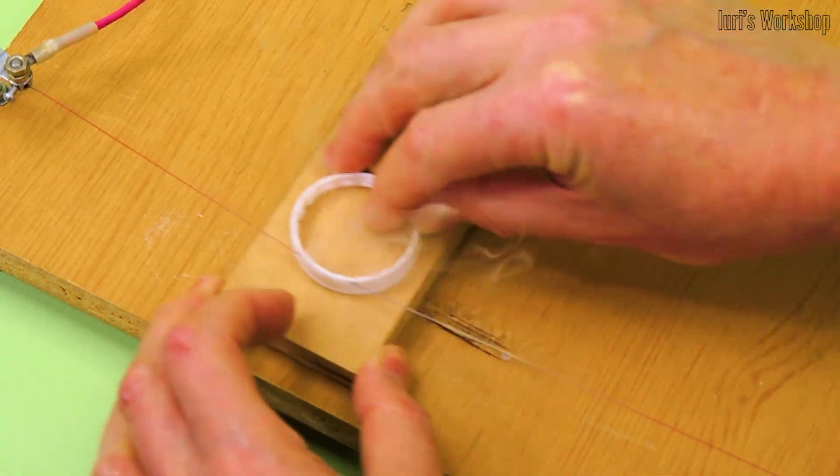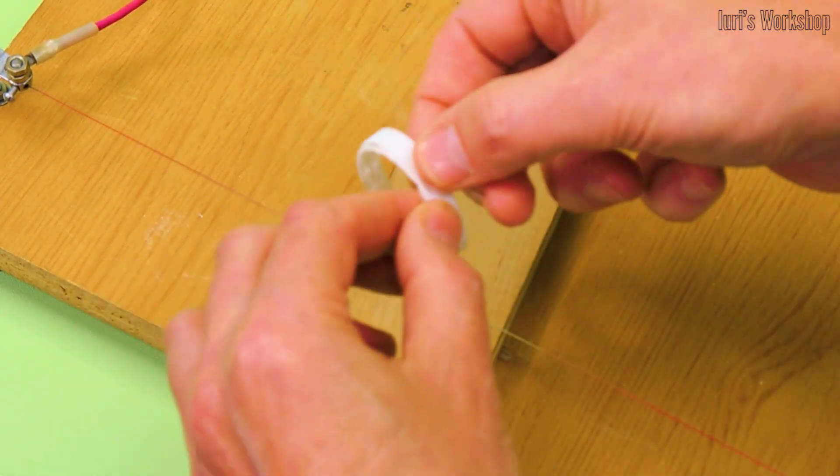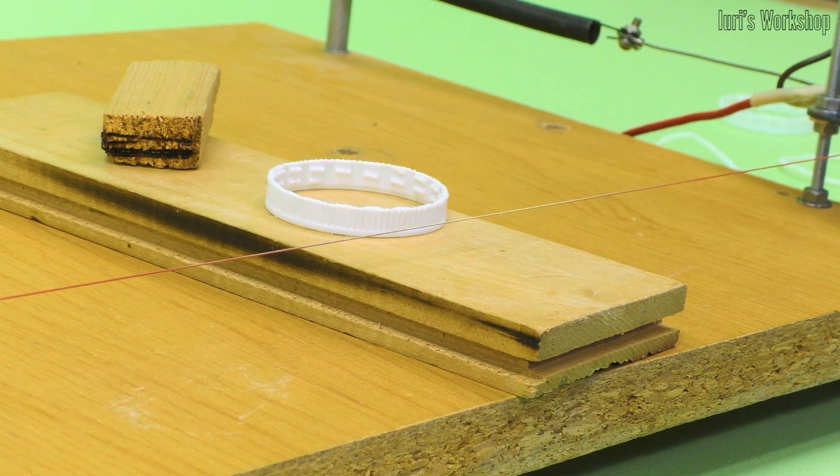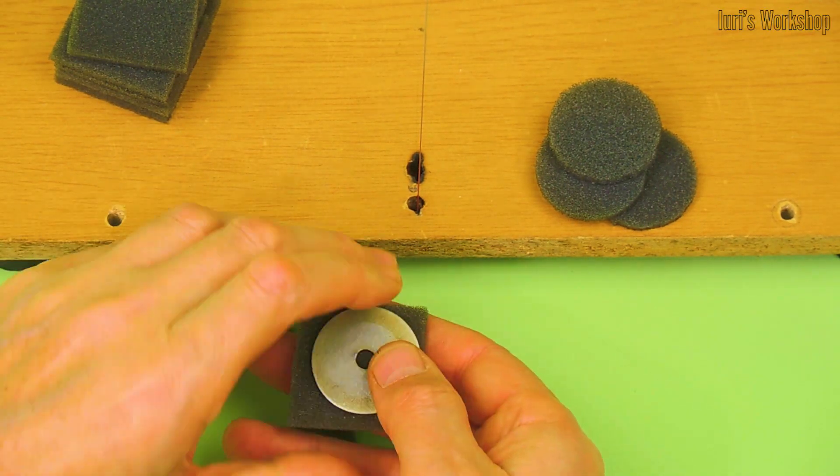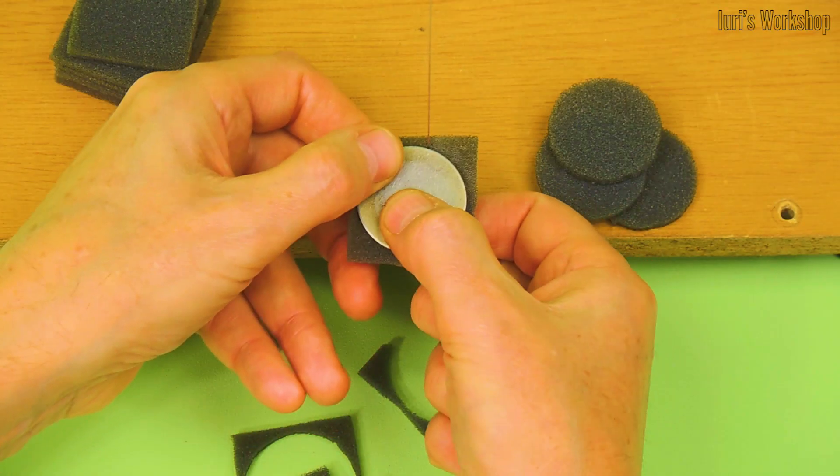This ring serves to increase the reliability of fastening the cartridge to the respirator body. This is how you can resize the foam filters.